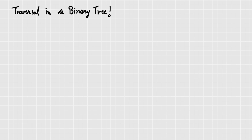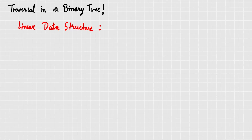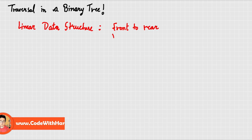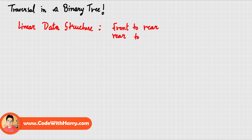The linked list example was a linear data structure. In a linear data structure, you can traverse in two ways: front to back, or rear to front.